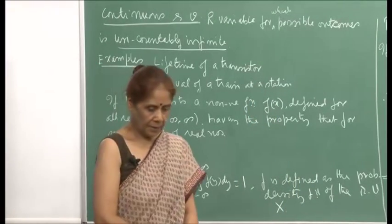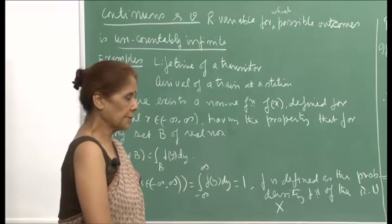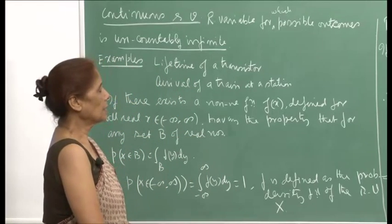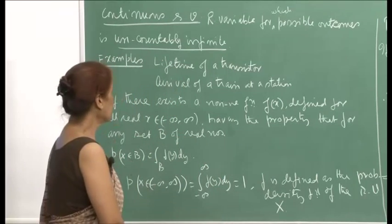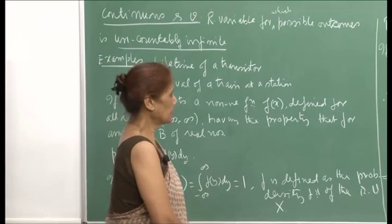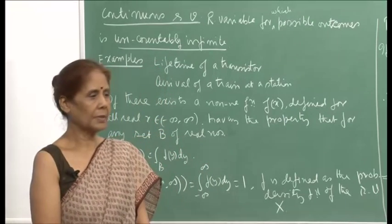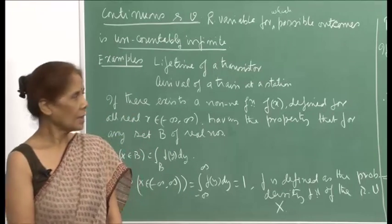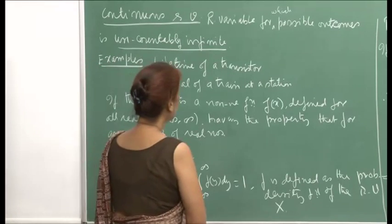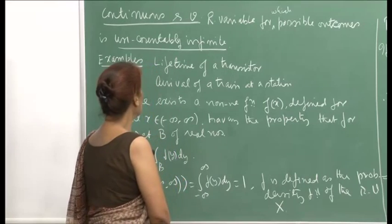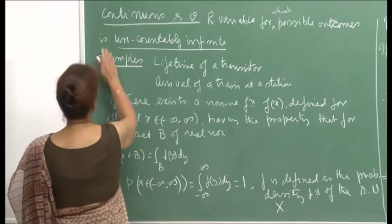Let us now look at the other type of random variables, which are continuous random variables. So far we have looked at discrete random variables and their special cases. Now I want to describe continuous random variables and then look at their special cases. These are random variables for which possible outcomes are uncountably infinite.